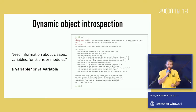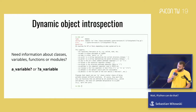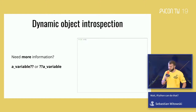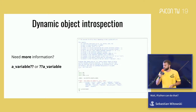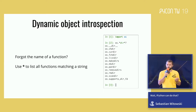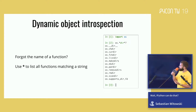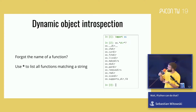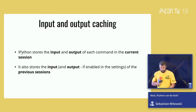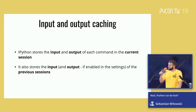What I really love about IPython is how easily you can access the documentation of basically any object — classes, variables, functions, modules. All you need to do is append or prepend a question mark to the name of the object. If you want to see the whole source code, use double question mark. Also, if you're not sure what a function is called, you can use stars as wildcards to list all functions matching a certain string. Here I want to run a function from the OS module and I vaguely remember it has 'dir' in the name, so I'm listing all functions that have 'dir' in the name.